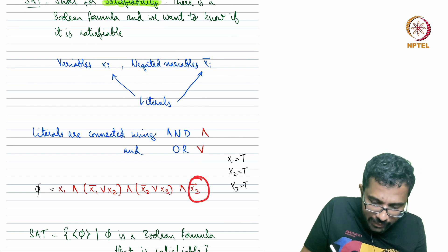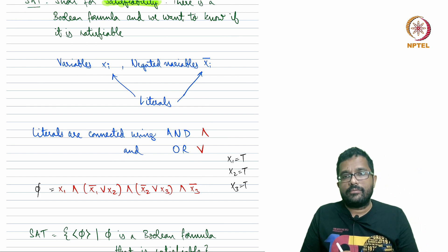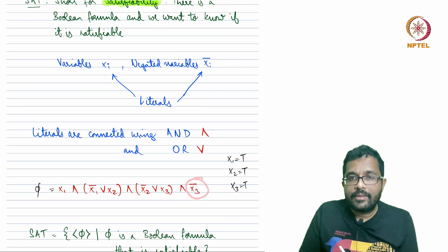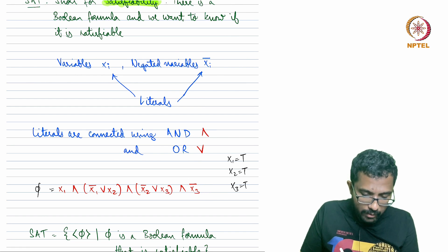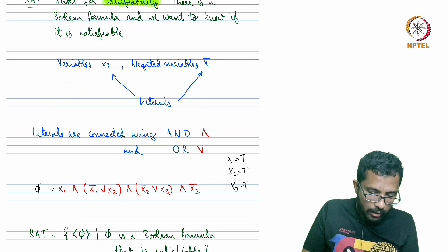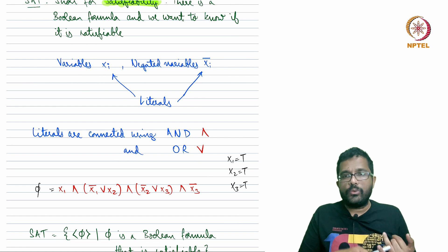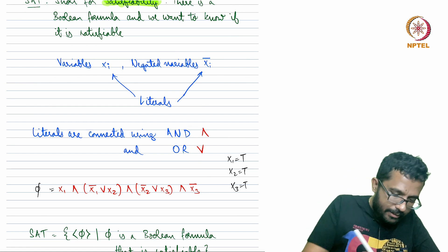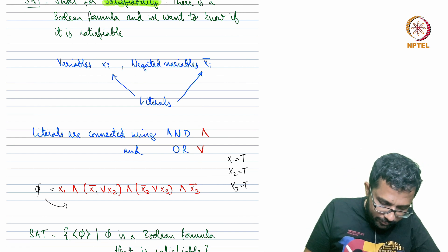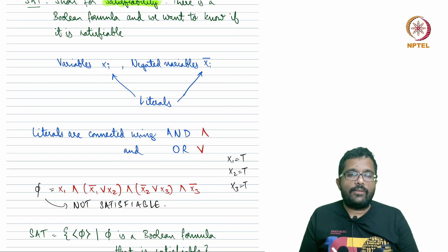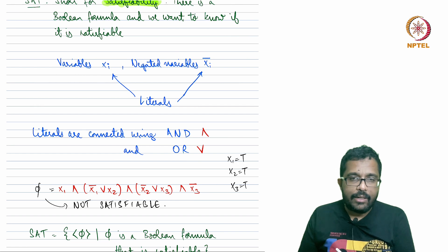But the final clause is just x3 complement. We already established that x3 has to be true, so x3 complement is false. This means the fourth clause is false, and we cannot find values for x1, x2, x3 that make the whole formula true. So this formula is not satisfiable.